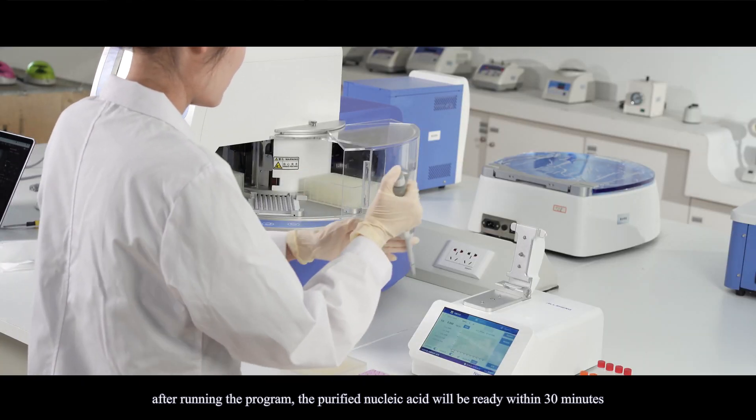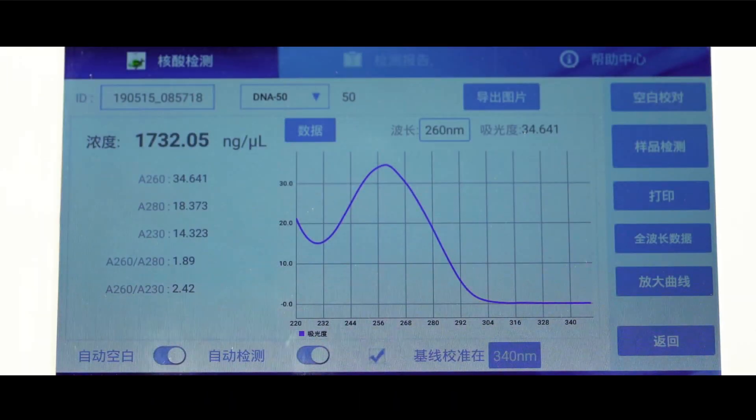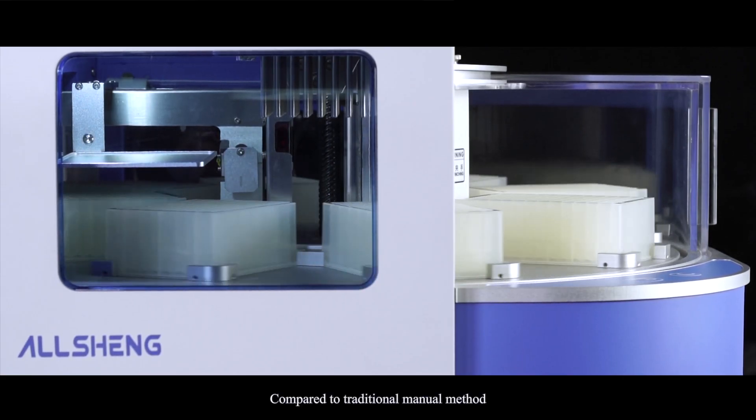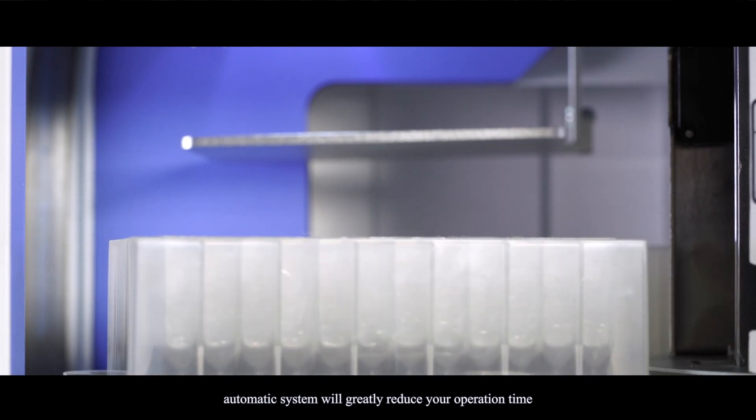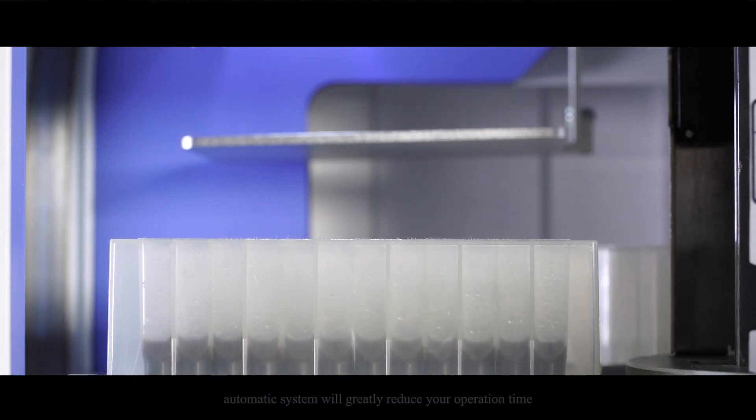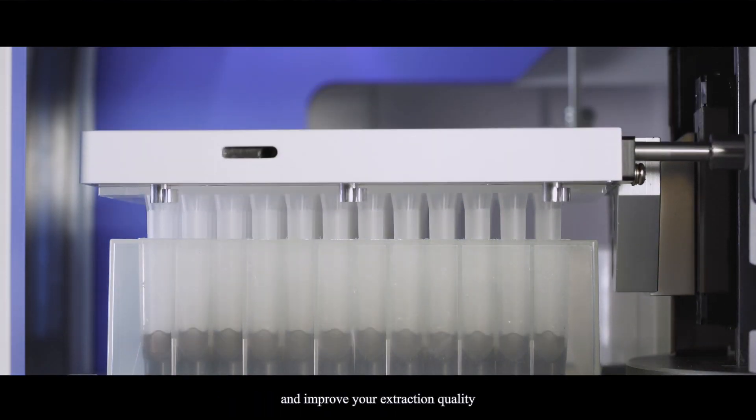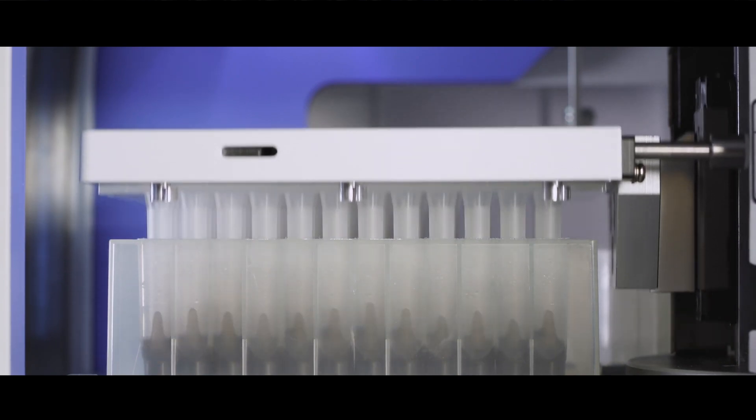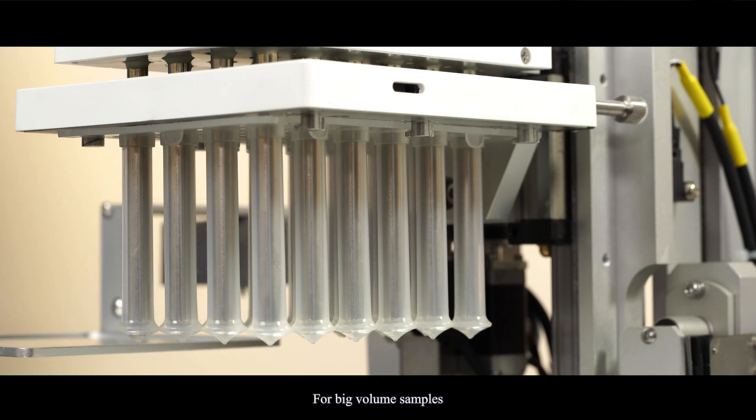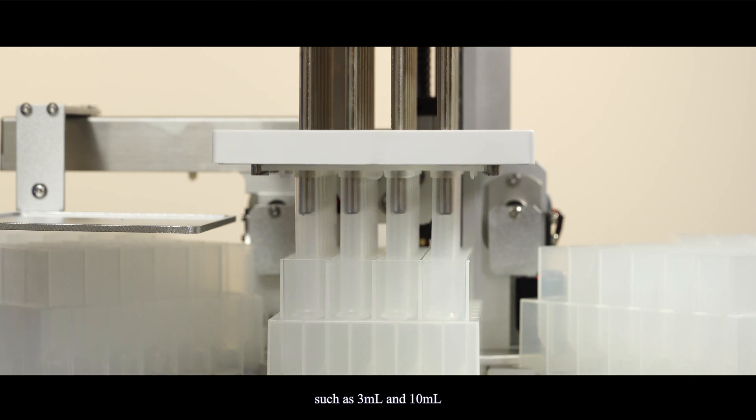Compared to traditional manual method, automatic system would greatly reduce your operation time and improve your extraction quality. For big volume samples, such as 3 milliliters and 10 milliliters, we can replace the heating module based on Auto Pure 96.